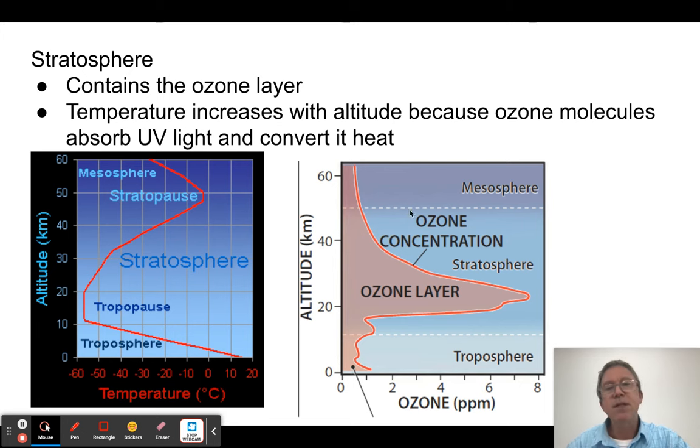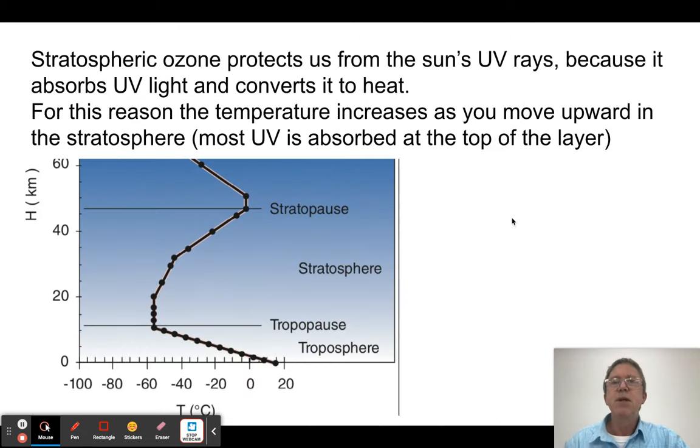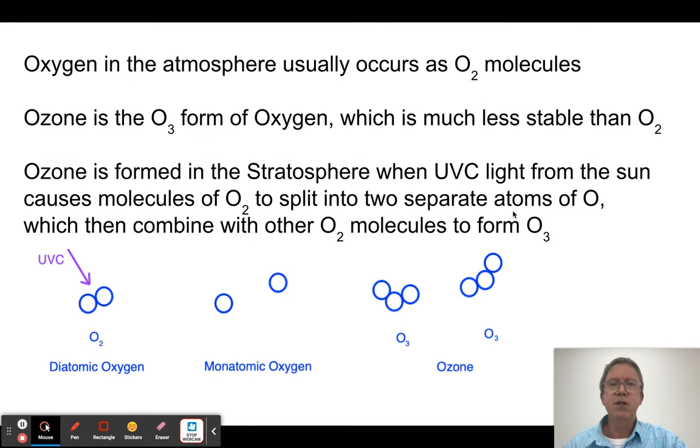It's really important because in absorbing it, it forms a chemical called ozone. Ozone is very important in protecting life on Earth from the harmful effects of ultraviolet light from the sun. It gets colder, colder, colder, we reach the tropopause. It gets warmer, warmer, warmer. We get the stratopause. The atmosphere usually occurs as O2, diatomic oxygen. But ozone is composed of O3, a form of oxygen which is less stable as O2.